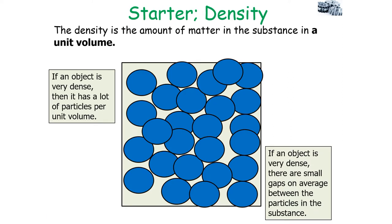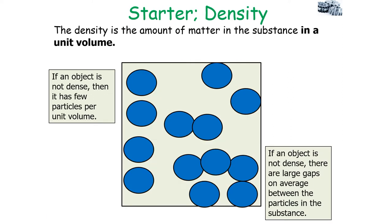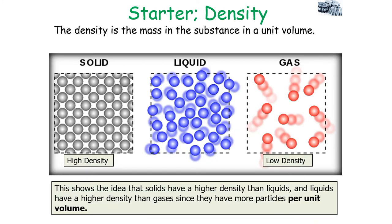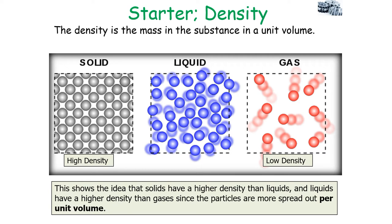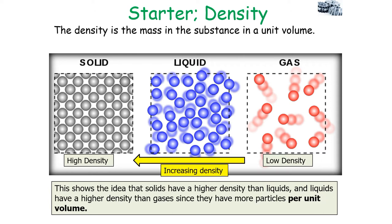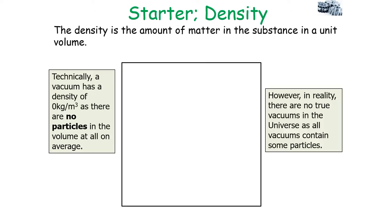Looking at the idea of density for a very dense object and a not very dense object, solids have a higher density than liquids, and liquids have a higher density than gases, since in each case they have more particles per unit volume. There is greater space between the particles per unit volume in a gas compared to a solid. Technically, a vacuum has a density of zero kilograms per metre cubed because there are no particles in the volume at all.